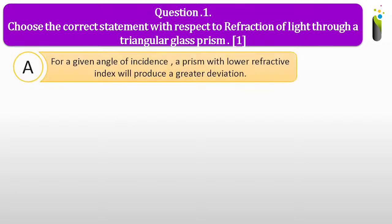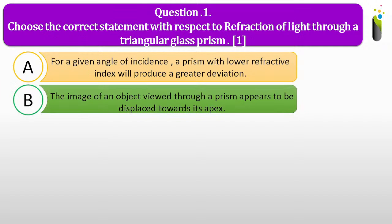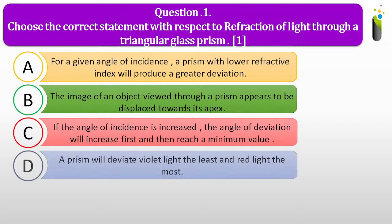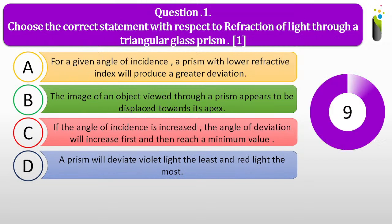The options are: A, for a given angle of incidence, a prism with lower refractive index will produce a greater deviation. B, the image of an object viewed through a prism appears to be displaced towards its apex. C, if the angle of incidence is increased, the angle of deviation will increase first and then reach a minimum value. D, a prism will deviate violet light the least and red light the most.